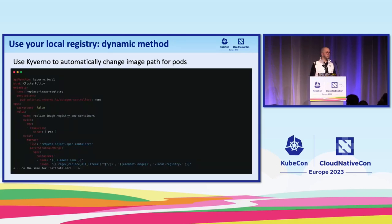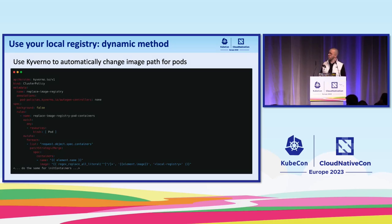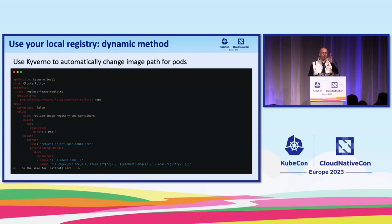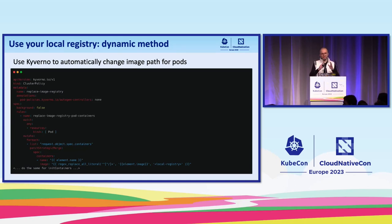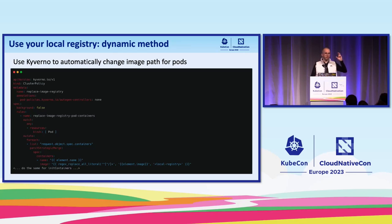One more time, we can think to use Kyverno and write a policy to automatically adapt the image path inside your pods. The example here is a little bit the same — you always have the same target, the pods, and you have a mutate action where you use a regex: you take everything before the first slash inside your image path and replace it with your local registry. It will also depend on the registry you are using, because depending on the registry, there is a different way to express the exact path of your image. Take care — the policy is split a little bit because you need to do that for the containers but also for the init containers.